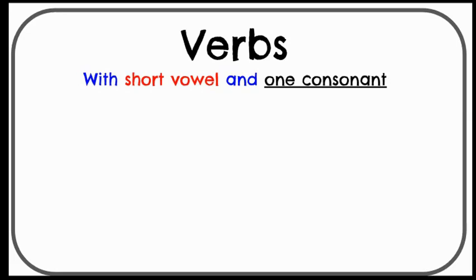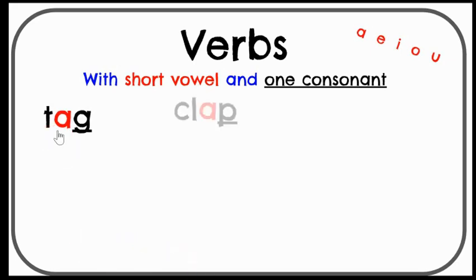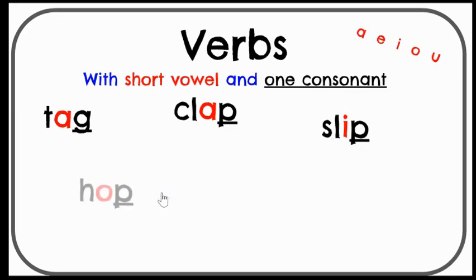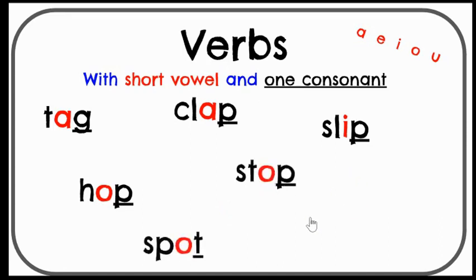Let's look at those verbs one more time. All of these verbs have a short vowel followed by one consonant. For example, tag has a short A sound with a G at the end — that's a consonant. Clap has a short vowel with consonants underlined. Slip, hop, stop — notice the vowel with one consonant. These vowels are short. And hum has our short U sound.